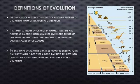The third definition says that it is the sum of adaptive changes from the pre-existing form that have taken place over a long time now resulted into diversity of forms, structure and functions among organisms. This definition is also referring to change in organisms which has enabled organisms to acquire certain adaptive features, some properties that is enabling them to survive in their present environment.